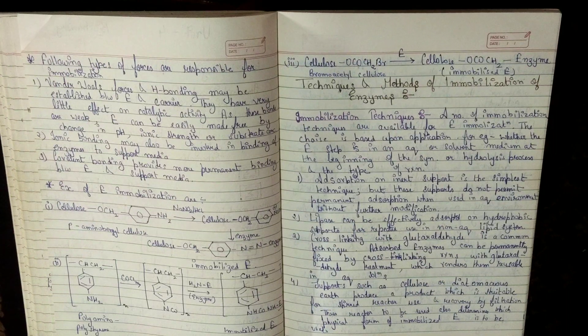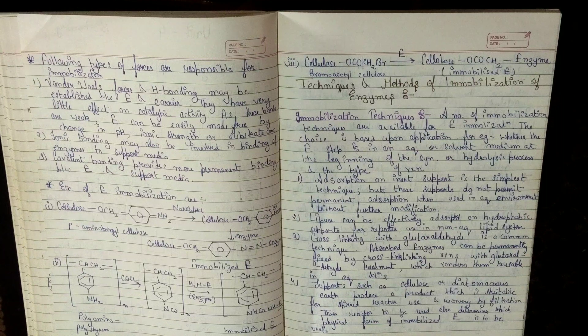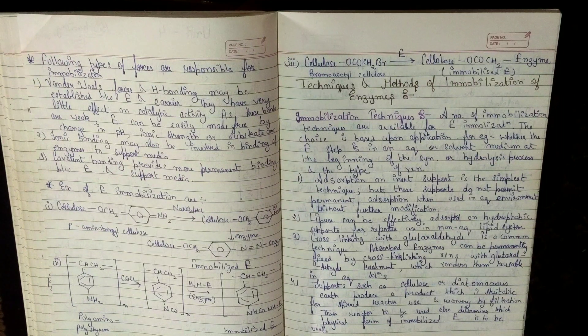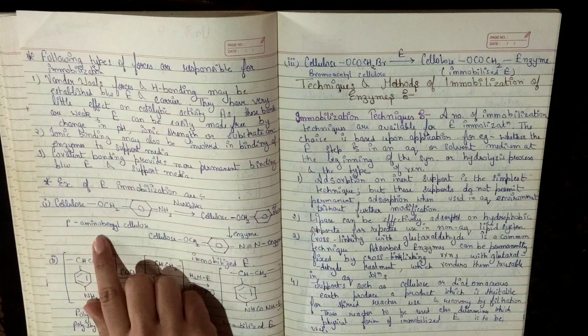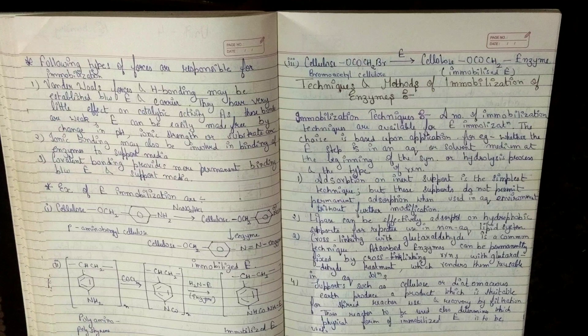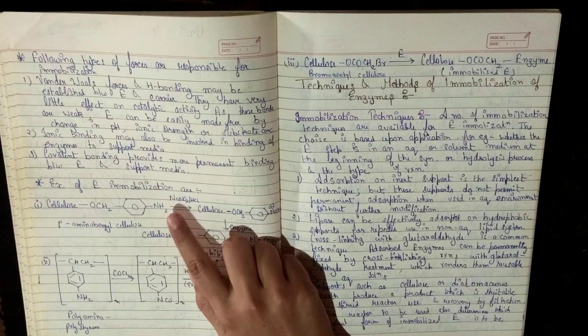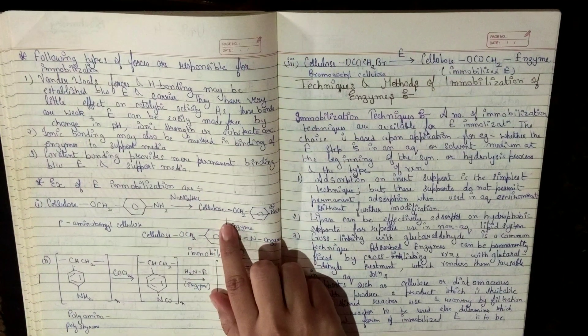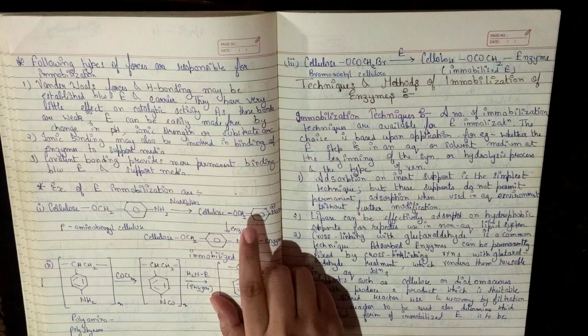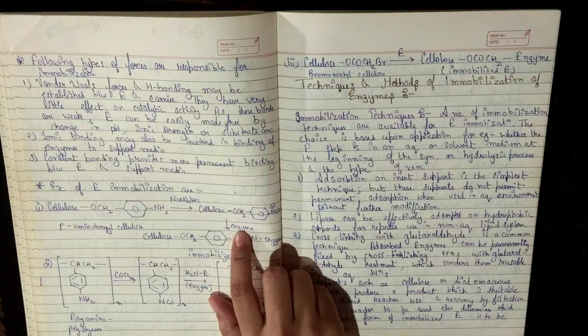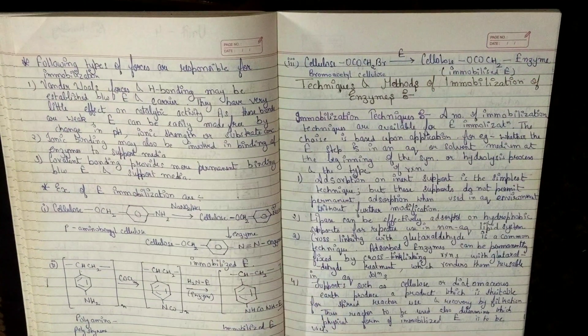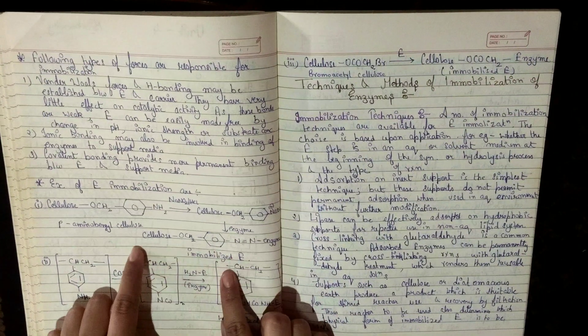Now, let us see the example of enzyme immobilization. Our first example is when coupling of para-amino-benzyl cellulose takes place in the presence of NaNO2 and HCl, it will give us diazonium derivative. Then, on further reaction with enzyme, it will give us immobilized enzyme.